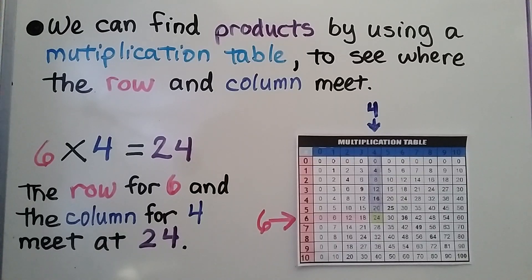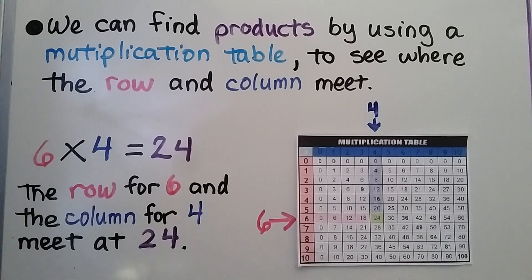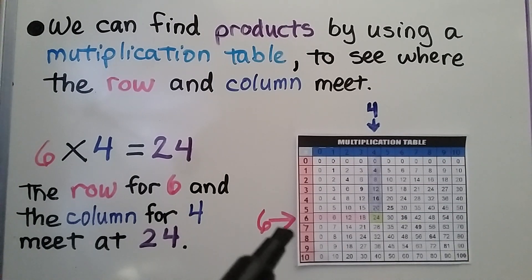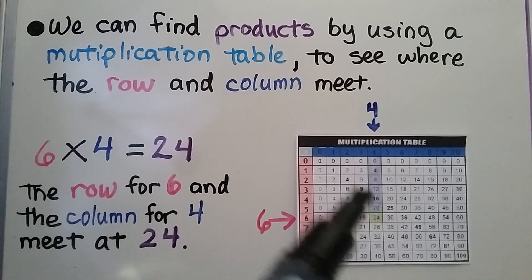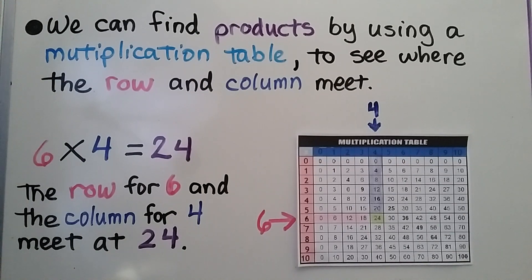We can find products by using a multiplication table — that's what this is right here. To see where the row and column meet for 6 times 4: we look at the row for 6, we look at the column for 4, and we see where they meet. They meet at 24, so 6 times 4 is equal to 24.